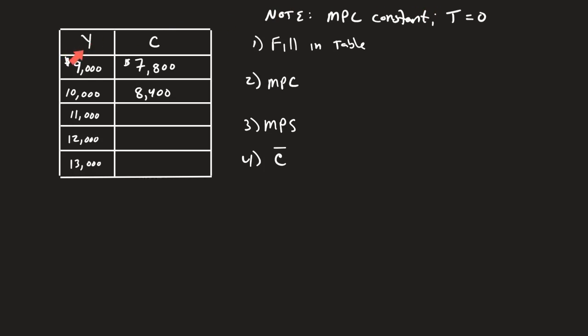We've got four questions that were given to you, right? We want to fill in this table, we want to find the marginal propensity to consume, the marginal propensity to save, and the level of autonomous consumption.